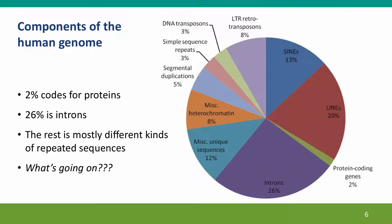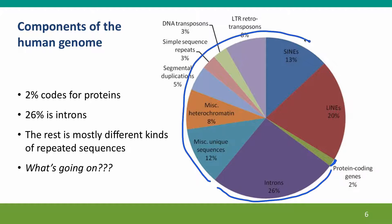Here's the other diagram we've looked at several times, showing the distribution of different kinds of sequences in our genome — with only 2% of the genome coding for proteins, another 26% coding for introns, and the rest being sequences that aren't really doing much of anything for our functioning.